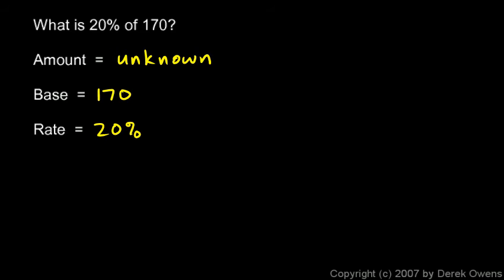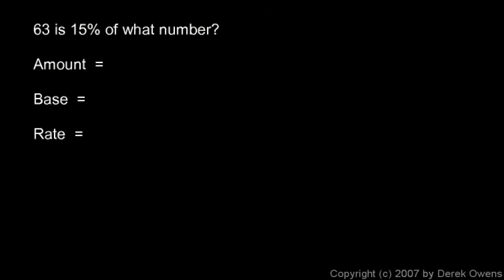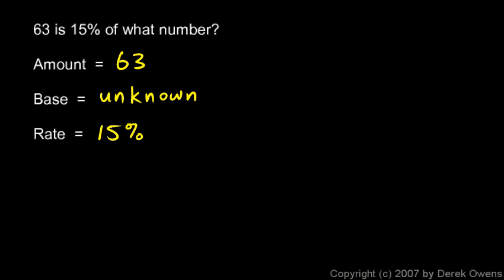Knowing what you're looking for is important, and that's what we're practicing — identifying what we're trying to find. Here's another one: 63 is 15% of what number? The percent is easy — that's the rate, 15%. Then 63 is some part of something else, so 63 is the amount. The 'something else' — the total we don't know — that's the base. So the base is our unknown here, what we'd be solving for.